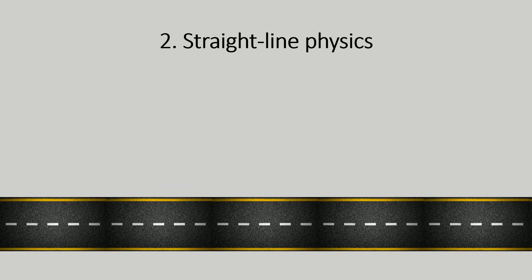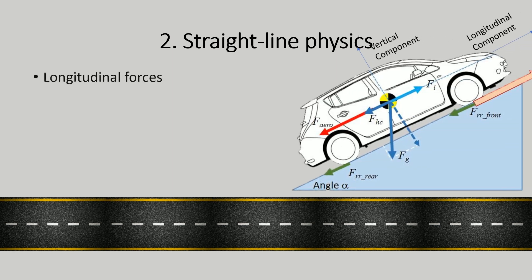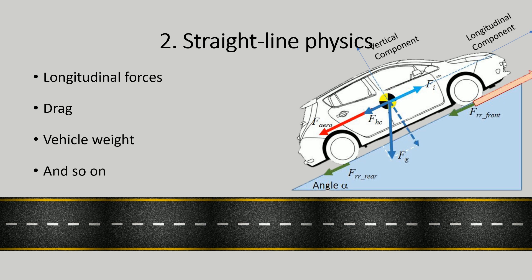For the second part, we consider the vehicle driving in a straight line. We will ignore steering forces and observe a limited set of forces acting on the vehicle in that scenario. These include constitutional forces, air drag forces, vehicle weight, and so on.